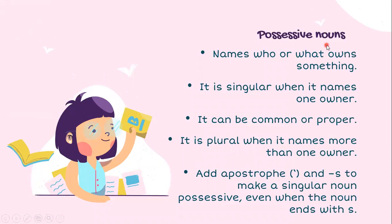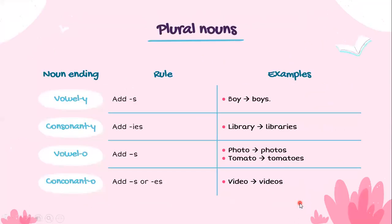Now, what are possessive nouns? Possessive comes from the word possess — when I possess something, I have or own something. So possessive nouns name who or what owns something. It's singular when it names one owner and can be common or proper; it's plural when it names more than one owner. We add apostrophe s to make a singular noun possessive, even when the noun ends with s.